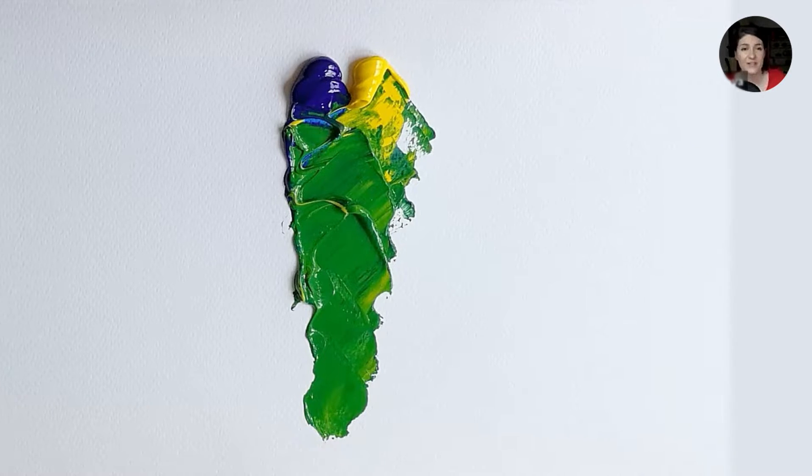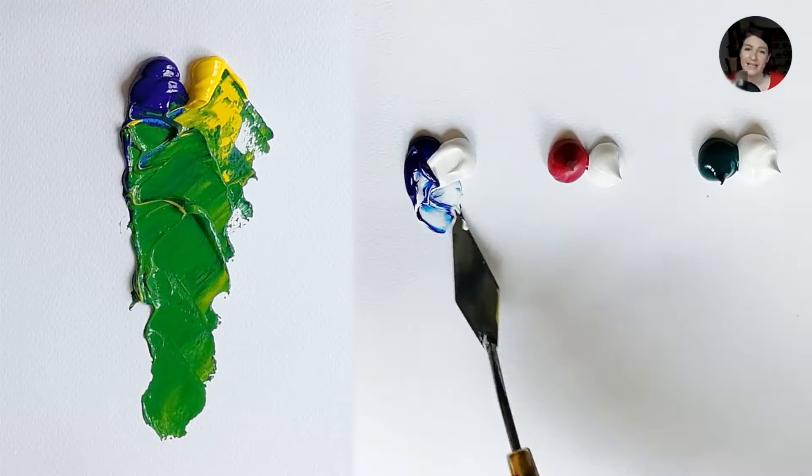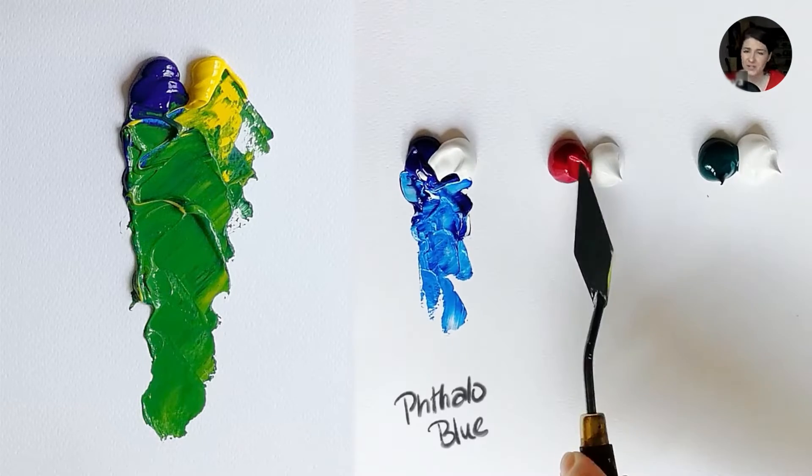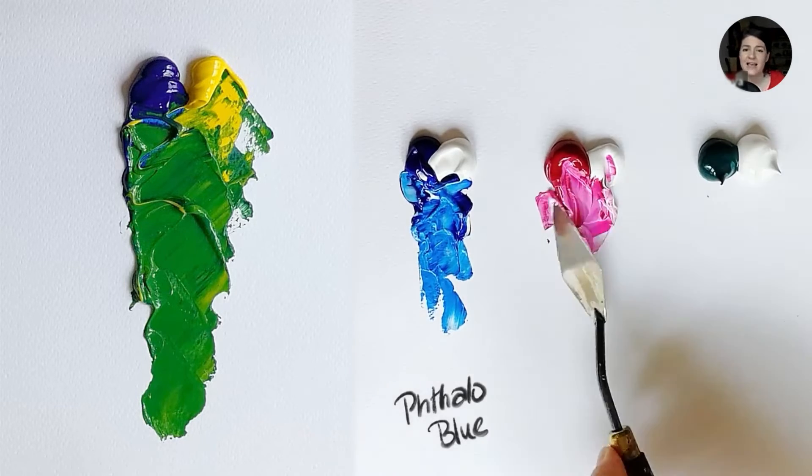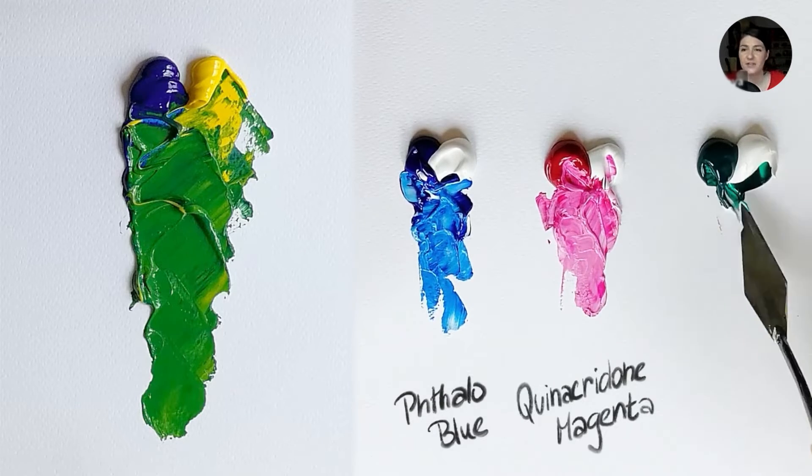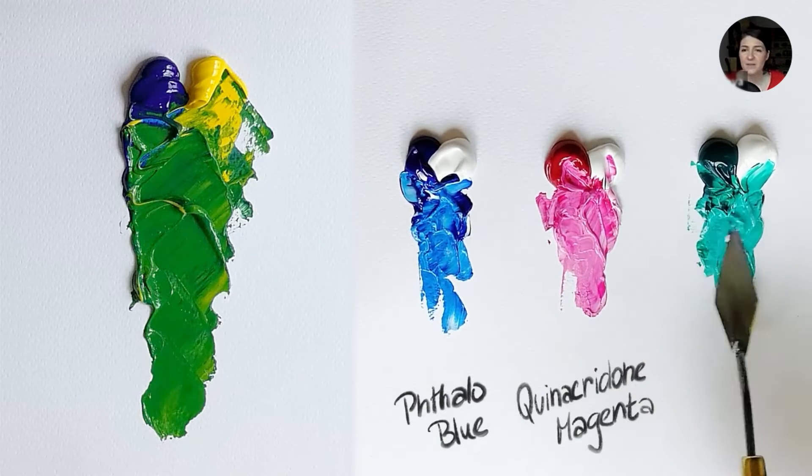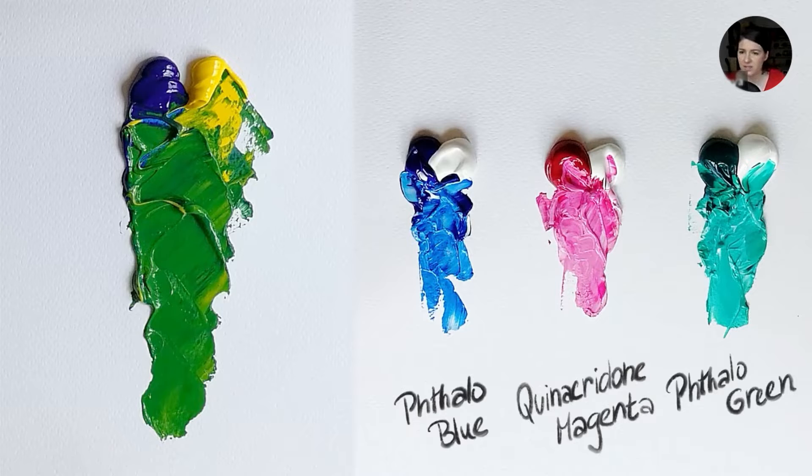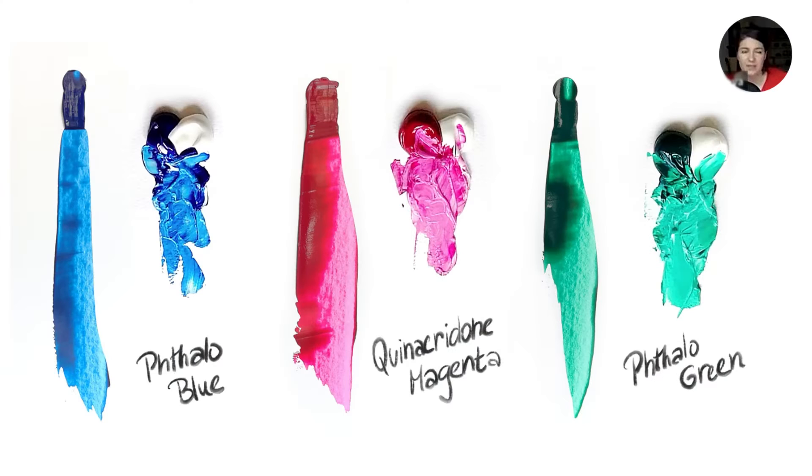Now let's have a look what happens to phthalo blue when we mix it with white. It changes hue to turquoise and it drastically increases saturation. And this happens to other pigments too. Magenta goes from dark red to pink, and phthalo green goes from green to cyan.